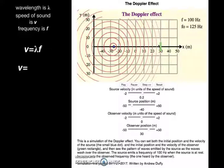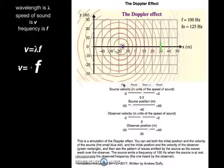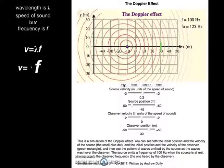And remember, if the wavelength goes down, the frequency goes up. So our observer will actually be hearing a frequency of 125 hertz, even though the source is only emitting the sound at a rate of 100 hertz. So if we let that play, our observer is hearing a higher frequency than is being emitted.